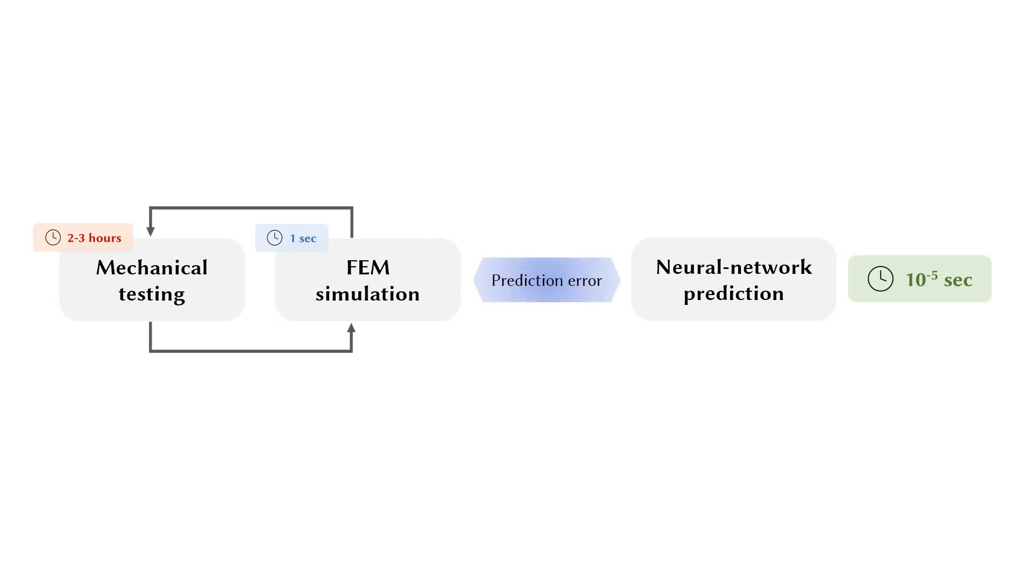Here, we apply the same information exchange scheme to the simulator and the neural networks. The simulation data is used for network training, while the networks propose potentially Pareto-optimal microstructures after running millions of predictions. This completes the nested loop workflow of our pipeline.